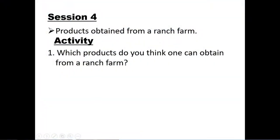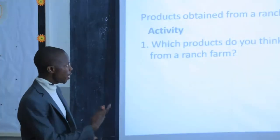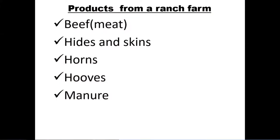Let's move to our session four — the products obtained from a ranch farm. Which products do you think one can obtain from a ranch farm, that place where they keep animals just for beef production? Which products can we pick from there? Take one minute and think about that. If we get their milk, then you can tell us milk; if we get their meat, then you tell us meat. But remember, all the animals you saw in the picture were bulls, so I doubt whether they can give us milk.